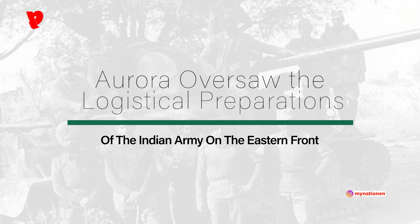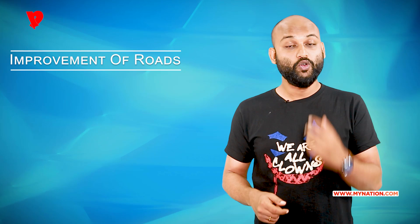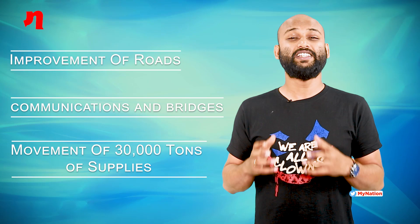For the next 8 months, with tensions escalating between India and Pakistan and anticipating possible hostilities, Aurora oversaw the logistical preparations of the Indian Army on the Eastern Front, including the improvement of roads, communications, and bridges, as well as the movement of 30,000 tons of supplies close to the border with East Pakistan.